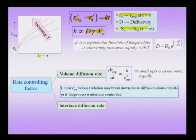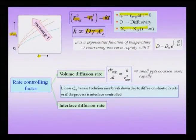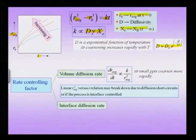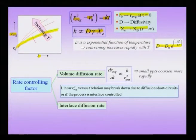With increasing time the average precipitate size increases, and the diffusivity goes as D = D₀ exp(−Q/kT). At higher temperature the rate of coarsening is much faster. If you plot r̄ versus t at a lower temperature you get one curve, but with increasing temperature the curve shifts upward — meaning for a given time you will have a higher average radius at higher temperature.